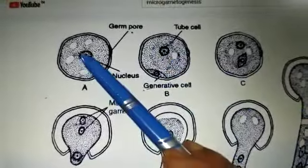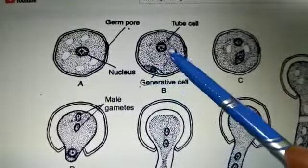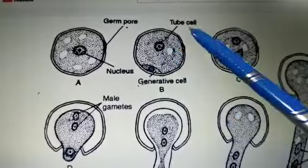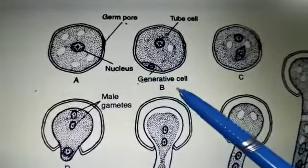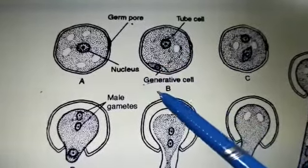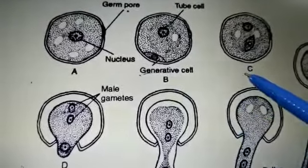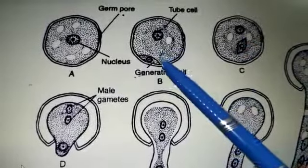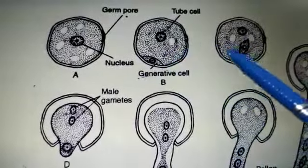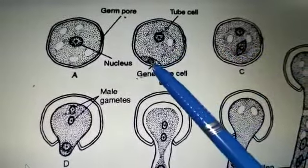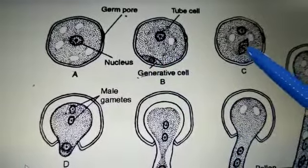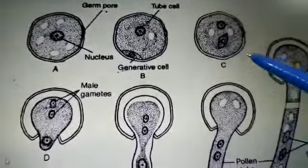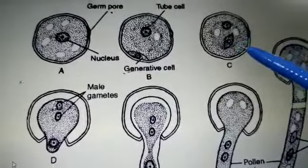The smaller cell with a small nucleus is called the generative cell. So the nucleus divides unequally into two cells — the larger cell is called the vegetative or tube cell, and the smaller cell is called the generative cell. After that, in diagram C, the wall between the two cells dissolves.